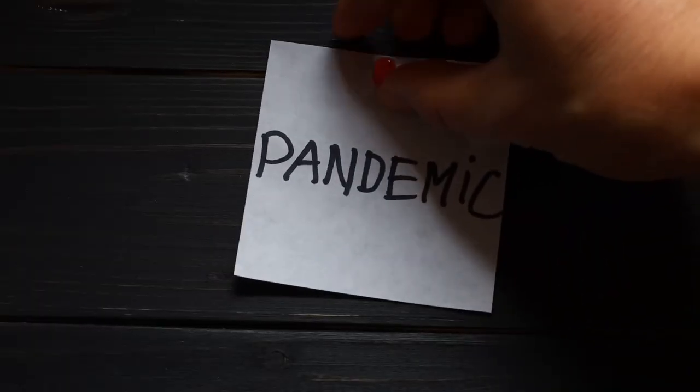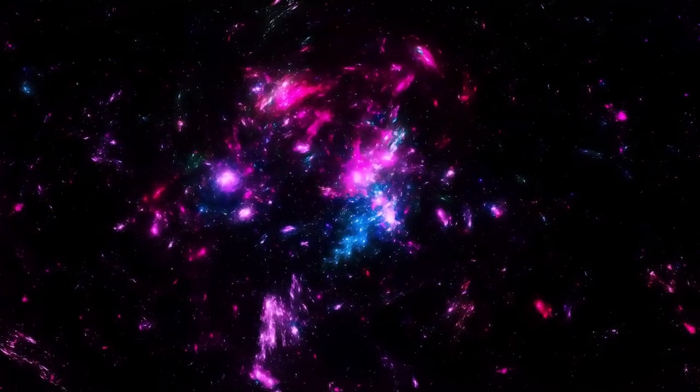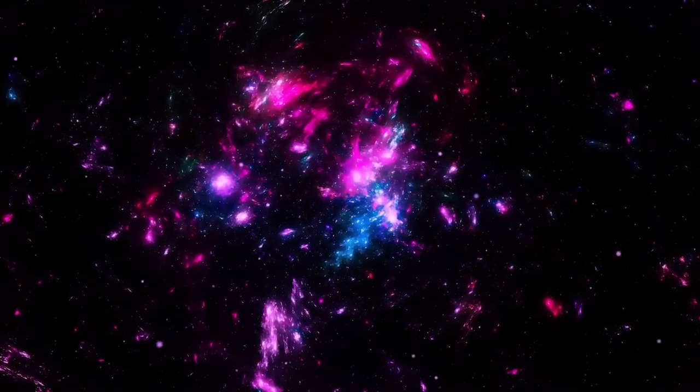And yet our vast solar system is just a tiny speck when placed within the Milky Way galaxy. The Milky Way contains approximately 300 billion stars, each likely accompanied by its own planetary system.